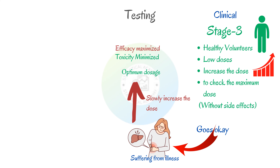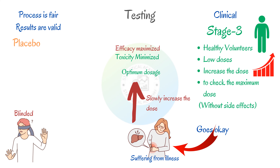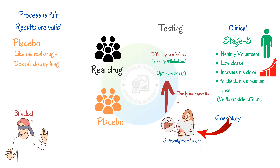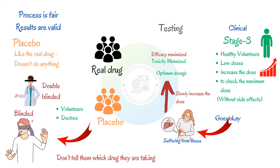The last thing we need to talk about is how we can ensure that the process is fair and the results we find are valid. To achieve this, clinical trials should be blind and use a placebo. A placebo is a substance that looks just like the real drug but doesn't actually do anything — for example, they often look exactly the same but are made up of sugar instead of the real medication. The most common technique is to give half of the volunteers the real drug and the other half the placebo, but most importantly we don't tell them which they are taking, which is why we say the trial is blinded. In fact, most trials are actually double-blinded, where neither the doctors nor the volunteers know which drugs have been taken by whom until all the results have been analyzed at the end of the study.